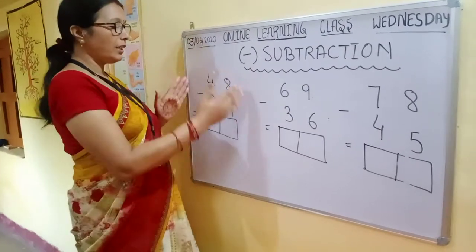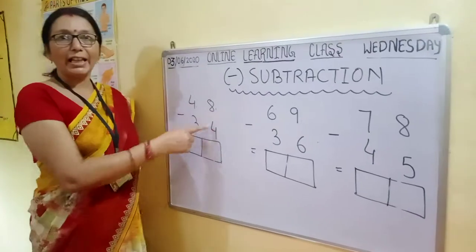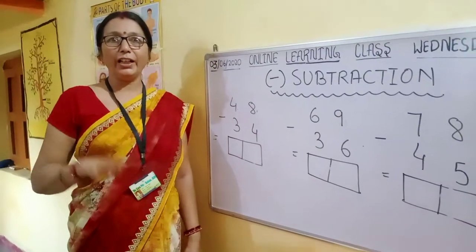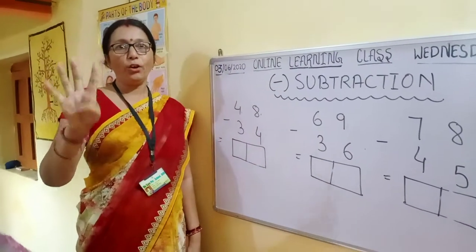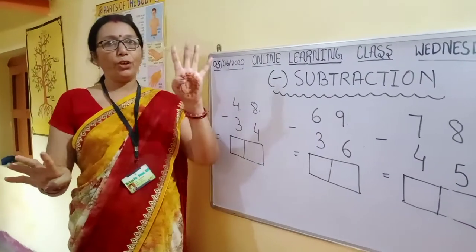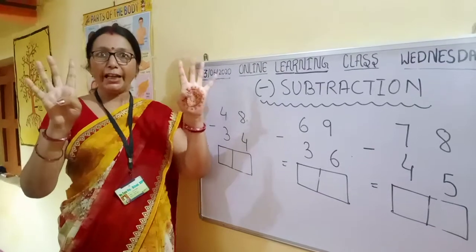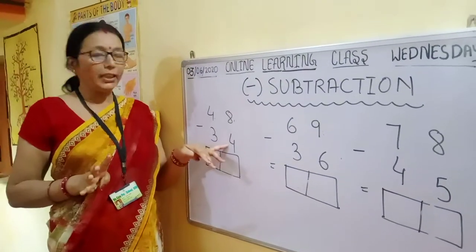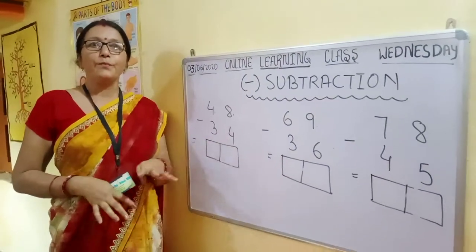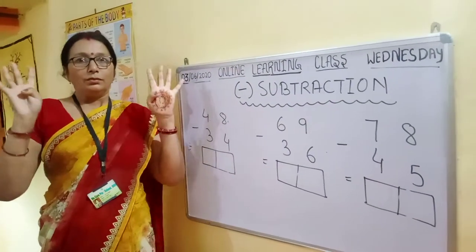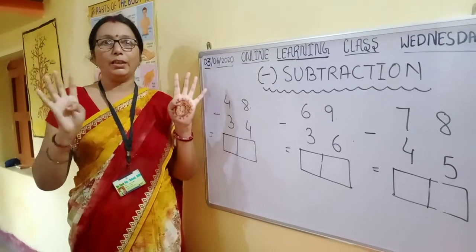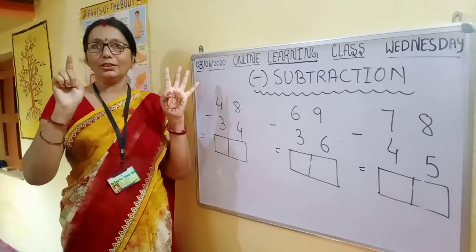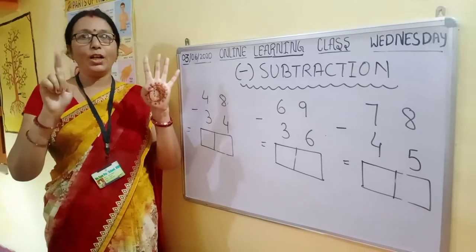The first row is, number is 8. Take out your 8 fingers — 4 fingers and 4 fingers, making 8 fingers.